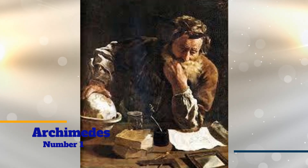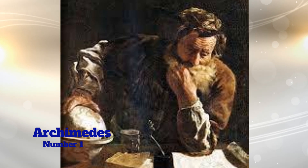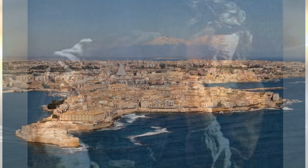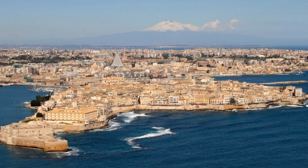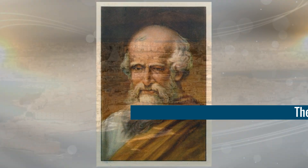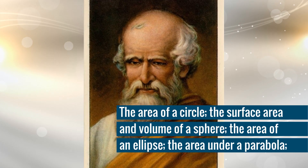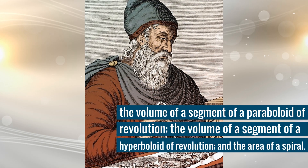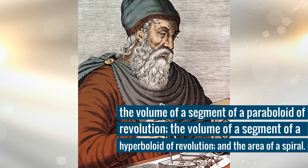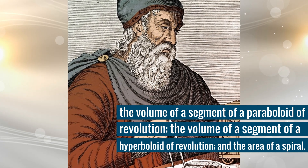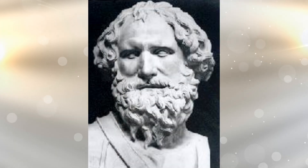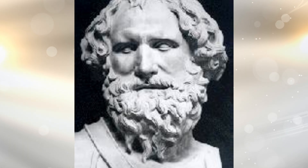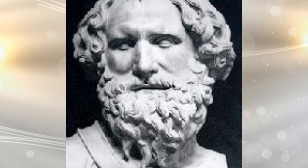Number 1: Archimedes. Greek mathematician, physicist, engineer, astronomer, and inventor — Archimedes of Syracuse was from the historic city of Syracuse in Sicily. The area of a circle, the surface area and volume of a sphere, the area of an ellipse, the area under a parabola, the volume of a segment of a paraboloid of revolution, and the area of a spiral were all rigorously proved by Archimedes, who is regarded as the greatest mathematician of ancient history and one of the greatest of all time.